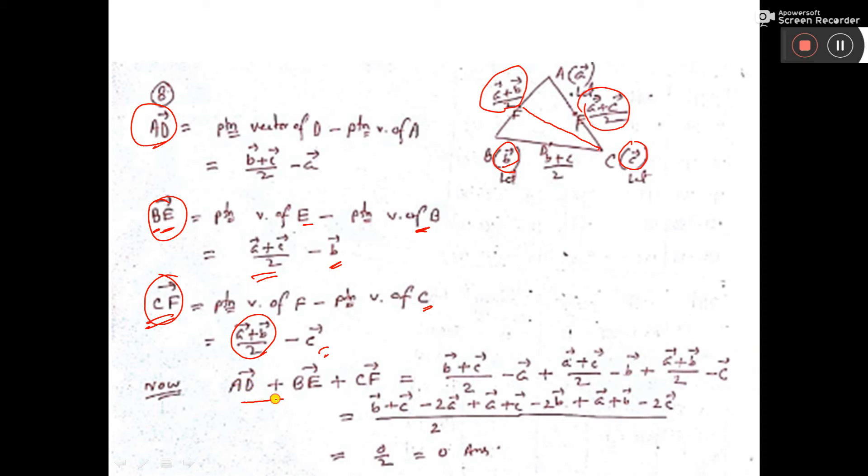Now if you add these three vectors and find a common denominator, the terms will cancel. B plus B equals 2b, which will cancel.